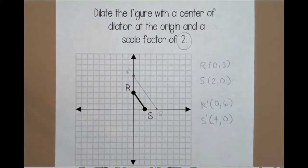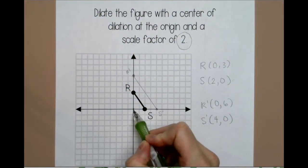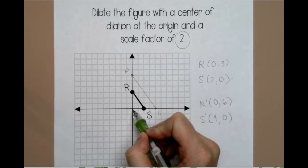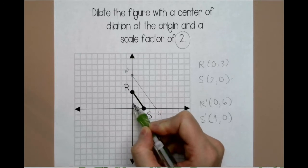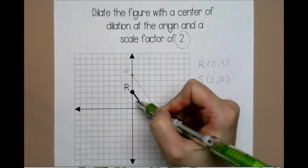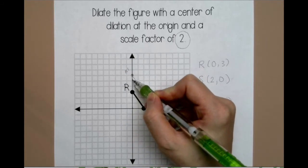There you go. Another method that you could use is just to count from the origin and double your counts. So what I mean is if I start at (0, 0) and I want to go to R, that would be up 1, 2, 3. I want to double that because my scale factor is 2, so I would double 3, which is 6. Go up 1, 2, 3, 4, 5, 6.